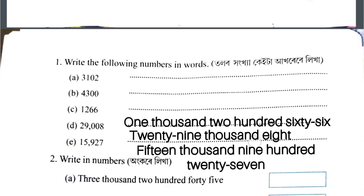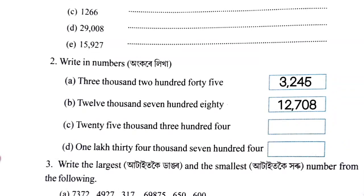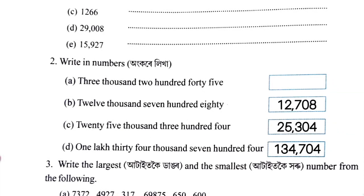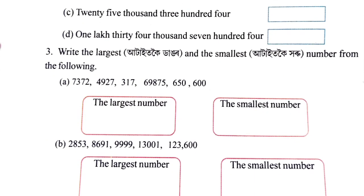If you write in words: 3,245. B number 2 is 12,708. C2 is 25,304. D number is 1,347. Next, C2 is 3,303. Next, write the largest and smallest number.